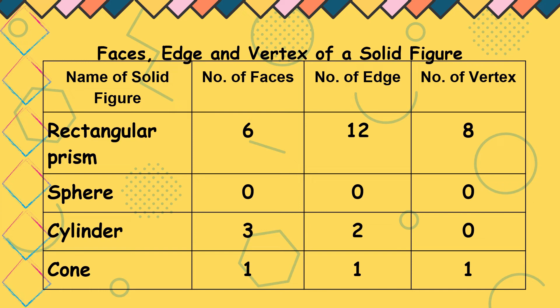While sphere, wala yung faces, edges, and vertex. Cylinder has 3 faces, 2 edges, and 0 vertex. While the cone, last is 1 face, 1 edge, and 1 vertex.